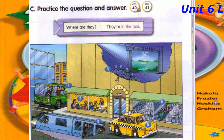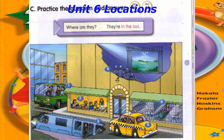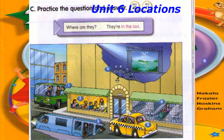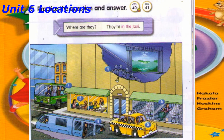Number 5: Where are they? They're in the taxi. Number 6: Where are they? They're at the store.